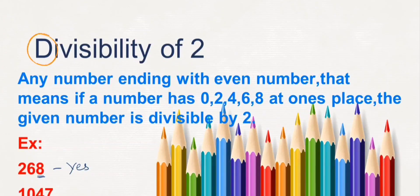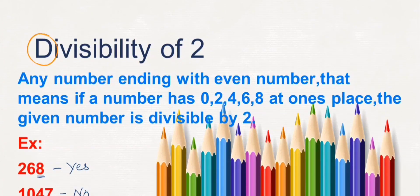Now look at another example. Here is 1047. What is the number at the ones place? 7. 7 is an odd number, so this number cannot be divided by 2. This is how you find out the divisibility of 2 — whether the number has 0, 2, 4, 6, or 8 at the ones place. Even numbers at ones place means the number will be divided by 2; if not, the number will not be divided by 2.